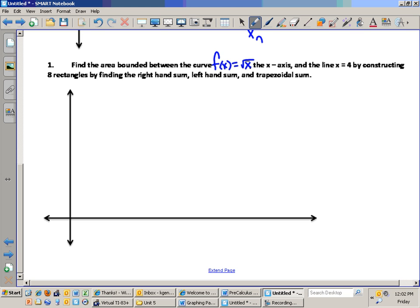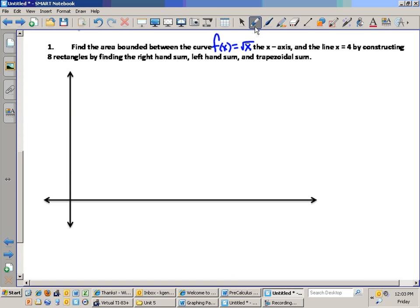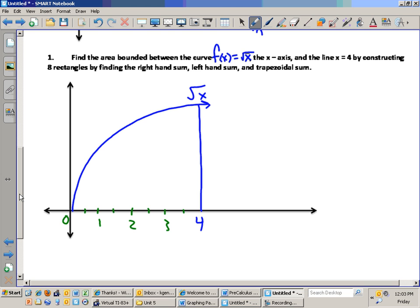We want to find the area bounded between the curve f of x equals the square root of x, the x-axis, and the line x equals 4 by constructing 8 rectangles. We're going to find the right-hand sum, the left-hand sum, and the trapezoidal sum. This is how the other problems on the back side will go. The first thing we should do is draw a picture. I'm going to draw a picture of the square root of x bounded by x equals 4 divided into 8 rectangles.